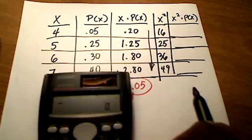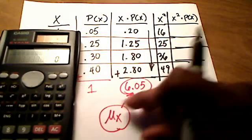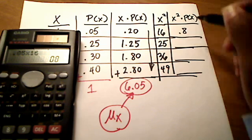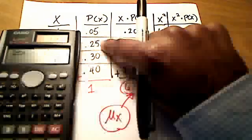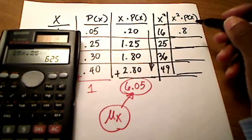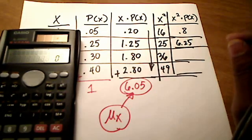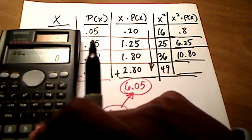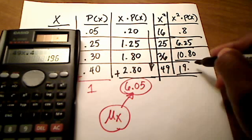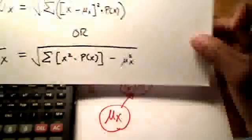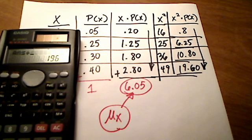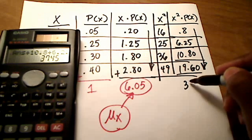So multiplying 0.05 times 16 gives 0.80. Then x squared of 25 times its probability of 0.25 gives 6.25. Then 36 times 0.30 gives 10.80, and 49 times 0.40 gives 19.60. Referring back to the formula, I now sum all of those products: 19.60 plus 10.80 plus 6.25 plus 0.80 gives us 37.45.